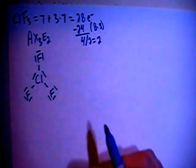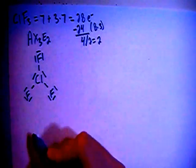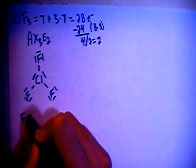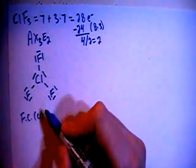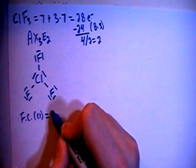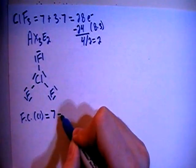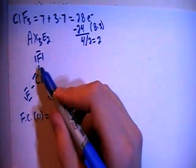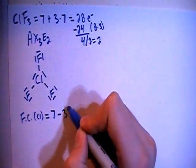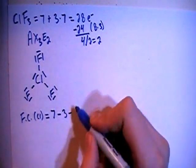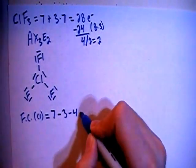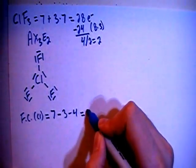Let's go ahead and verify that by calculating the formal charges. So the formal charge on the central chlorine is going to be equal to the 7 valence brought in minus the 1, 2, 3 bonds minus 1, 2, 3, 4 non-bonding electrons for a formal charge of 0.